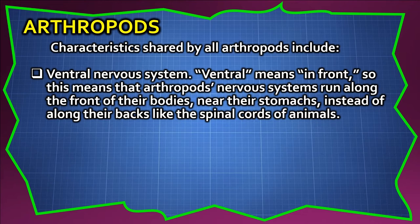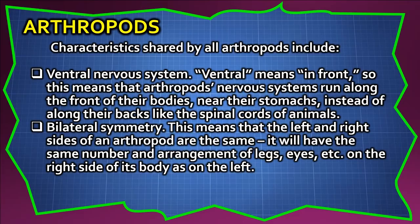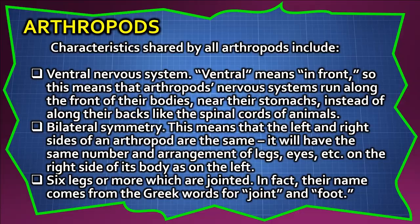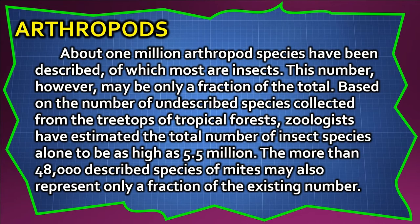Bilateral symmetry means that the left and right sides of an arthropod are the same — it will have the same number and arrangement of legs, eyes, etc. on the right side as on the left. Arthropods have six legs or more, all jointed; their name comes from the Greek words for 'joint' and 'foot.' About 1 million arthropod species have been described, most of which are insects, but this may be only a fraction of the total. Zoologists have estimated the total number of insect species alone to be as high as 5.5 million, and the 48,000+ described species of mites may also represent only a fraction.